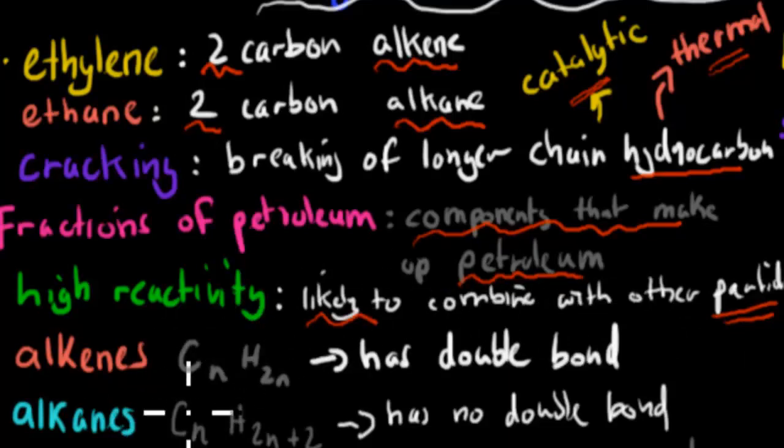Alkenes have a general structural form of CnH2n and they have a double bond. That's what alkenes are. Whereas alkanes have CnH2n plus 2, so you have two more hydrogens than your alkenes, but they have no double bond.